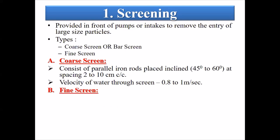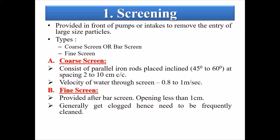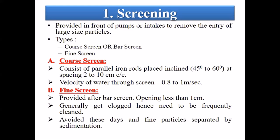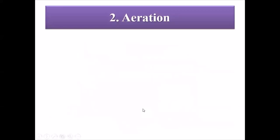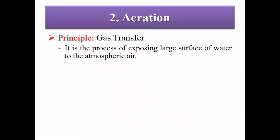Fine screen is provided after the bar screen with openings less than one centimeter. It generally gets clogged and hence needs to be frequently cleaned. Fine particles are removed separately by sedimentation. This is the actual diagram of the coarse screen showing the angle of inclination, and a basket is provided in section and plan.